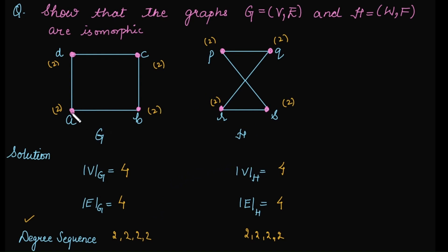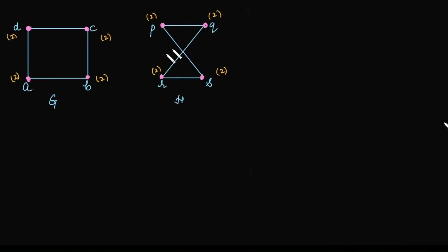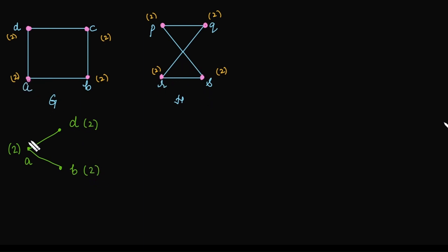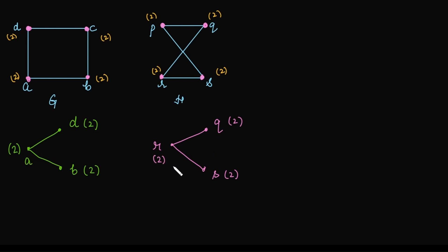We will try to map the vertices from graph G to graph H. First, pick vertex A from graph G. Its degree is 2 and it has two adjacent vertices D and B, whose degrees are also 2. From graph H, identify a vertex whose degree is 2 and whose adjacent vertices also have degree 2. Let's pick vertex R: degree of R is 2 and its adjacent vertices also have degree 2. So we can map vertex A with R.